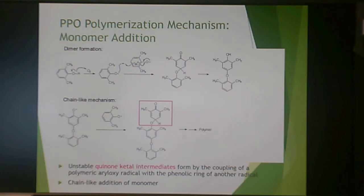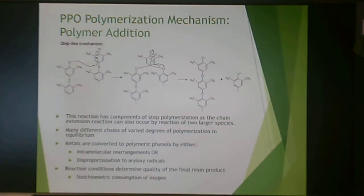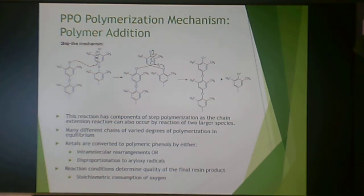This is the polymerization mechanism, though it won't be required for an exam. You have monomer addition and dimer formation. It's kind of like condensation, but you also have a chain-like mechanism as well. These quinone-ketal intermediates form by the coupling of a polymeric aryloxy radical, giving it a weird hybrid-type mechanism. There's also a step-like mechanism where components can occur by the reaction of two larger species, such as monomer reacting with polymer.